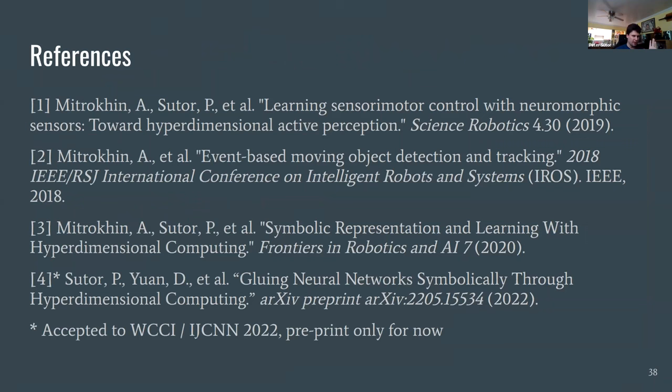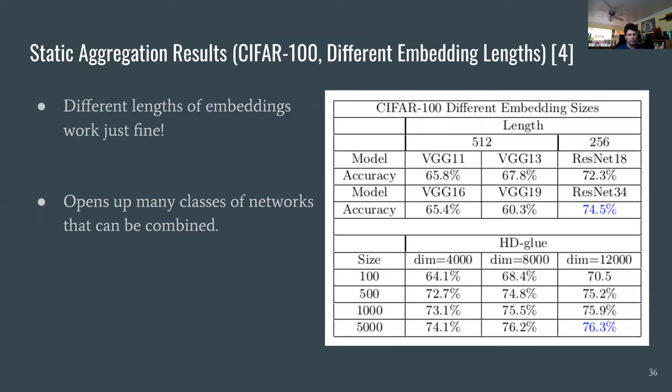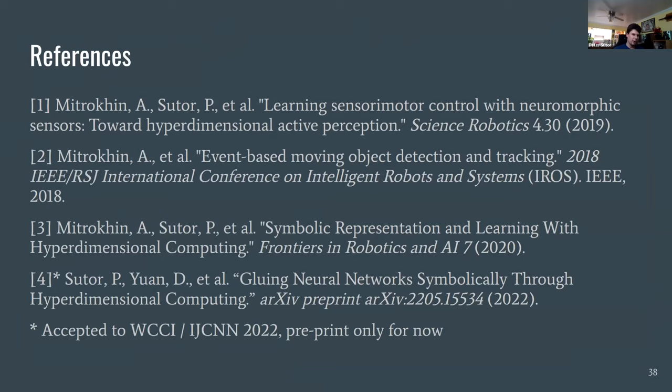The HD Glue results generally outperform typical methods of aggregating neural network outputs — the aggregation baseline shown in blue is outperformed by their model. These results conclude the talk, with reference papers listed for each of the topics discussed.